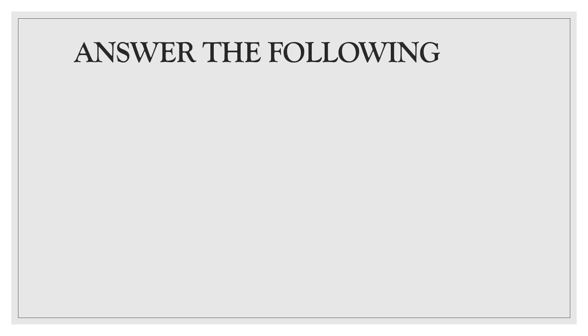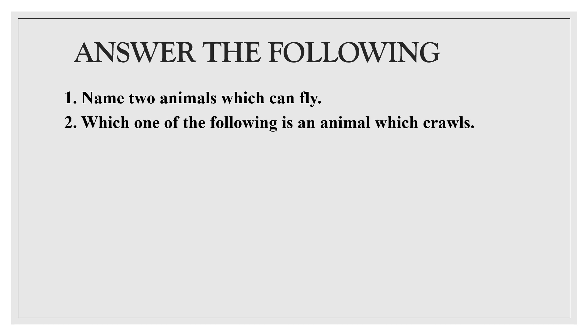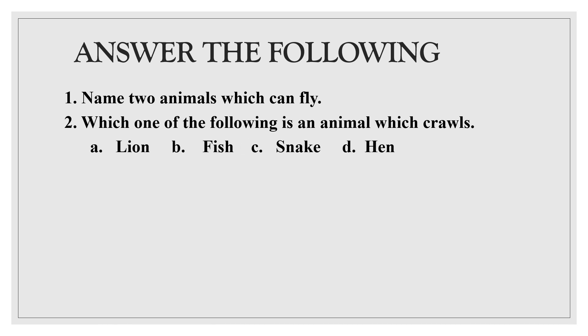Now let me check what you understood from the topic. Answer the following. First question: Name two animals which can fly. Second question: Which one of the following is an animal which crawls? Options — A. Lion, B. Fish, C. Snake, D. Hen.